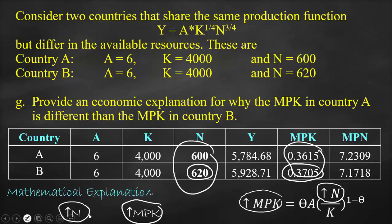In summary: higher N results in lower MPN but higher MPK. Country B has a lower MPN but a higher MPK compared to Country A. You can explain this using either economic reasoning or mathematical reasoning.